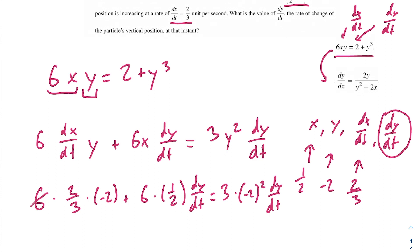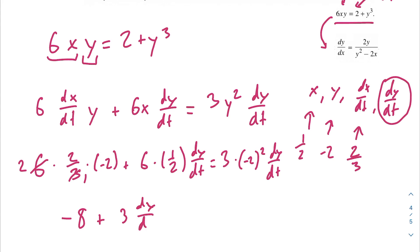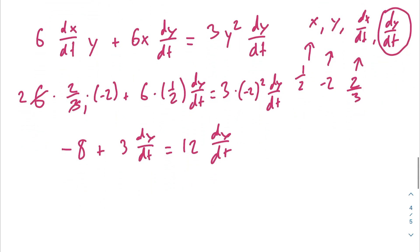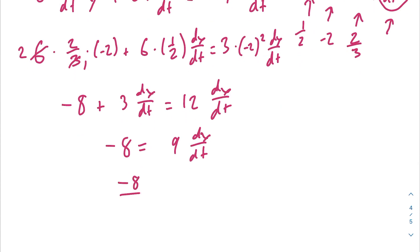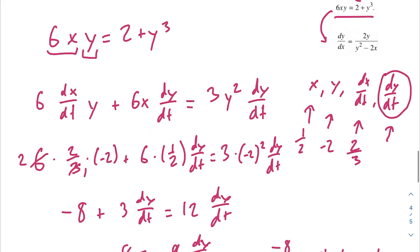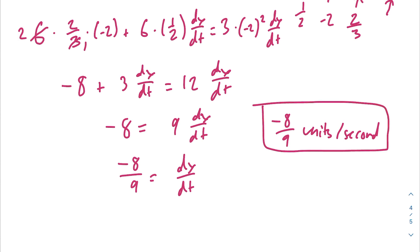Subtracting 3·(dy/dt) from both sides gives −8 = 9·(dy/dt). Dividing both sides by 9 gives dy/dt = −8/9 units per second. The units are units per second because dx/dt was given in units per second. That's our answer for part (d).